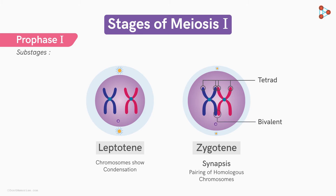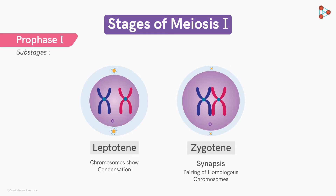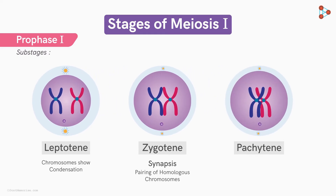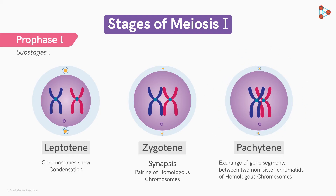After forming bivalents, the cell enters the next substage called pachytene. Here, the bivalents exchange gene segments between the non-sister chromatids of homologous chromosomes. This process is called crossing over.